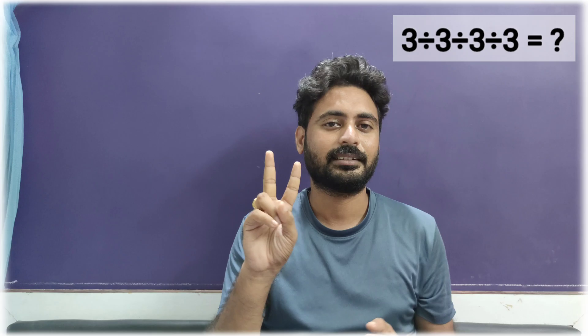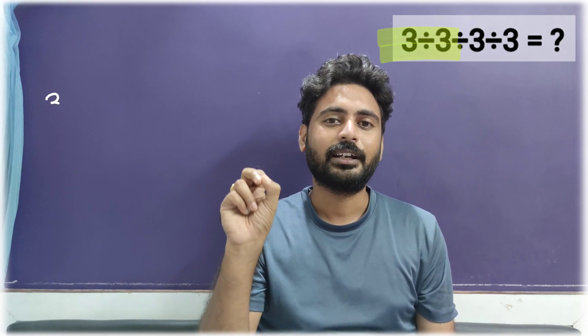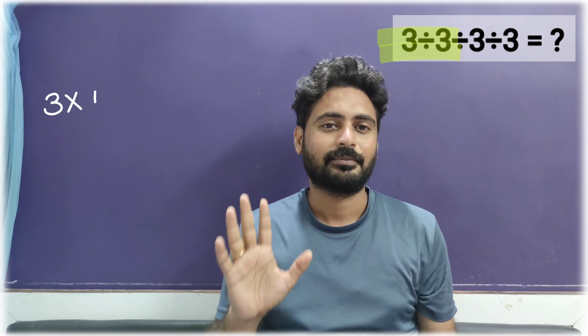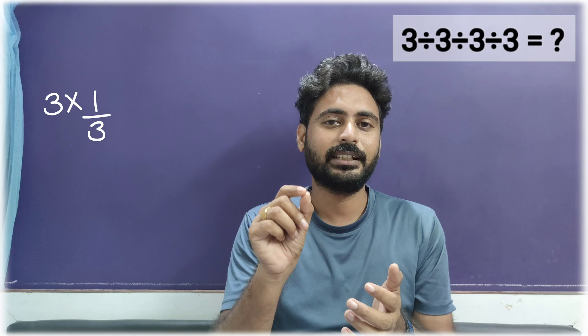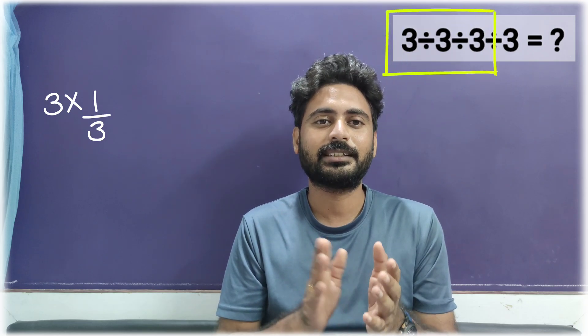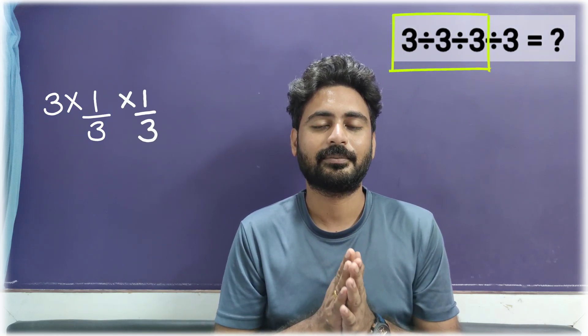Just ignore all those 3's for now — focus on just the first two. 3 divided by 3: you can write this as 3 multiplied by 1/3. If you add one more 3, you can write it as 3 times 1/3 times 1/3.